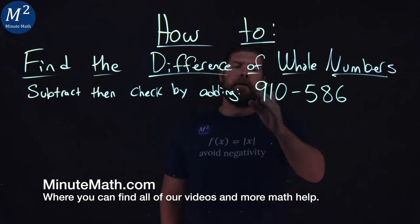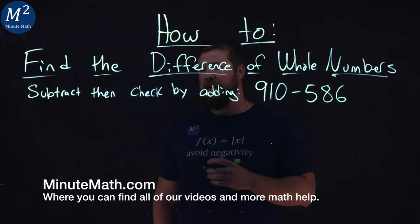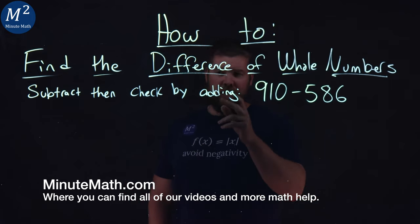We're given this problem here, 910 minus 586, and we want to subtract these and check by adding.